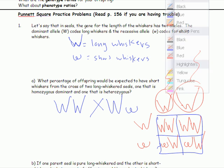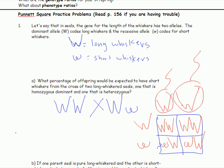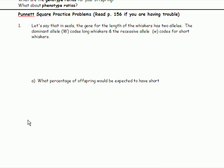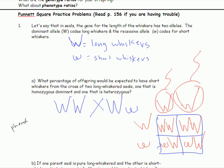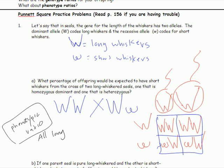Now we are going to do the ratios. So the phenotypic ratio — what does everything look like? Everything has long whiskers. So you can write it as four to zero, or you can just say all long whiskers. Because remember, phenotype means what do they look like? They would all have long whiskers.